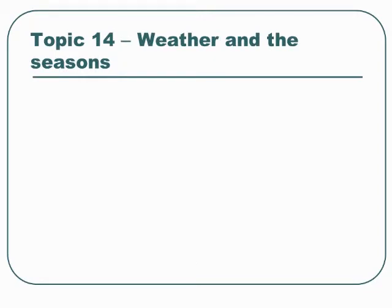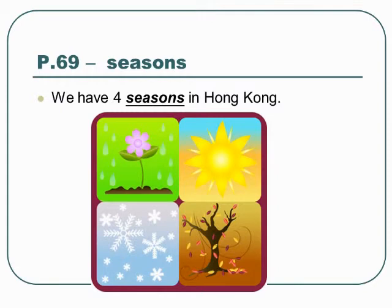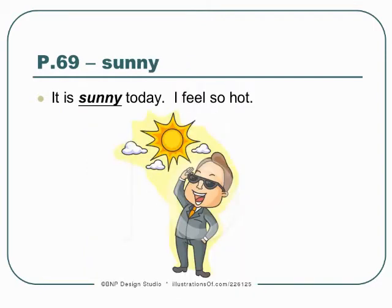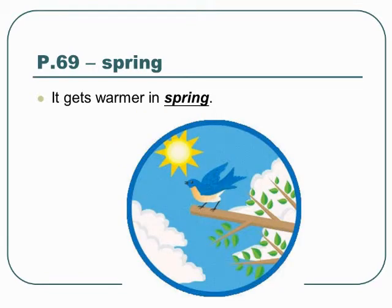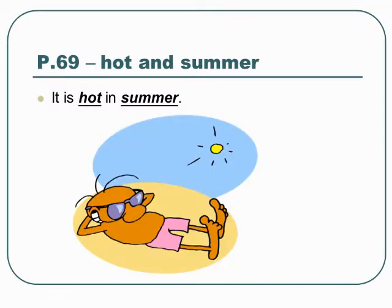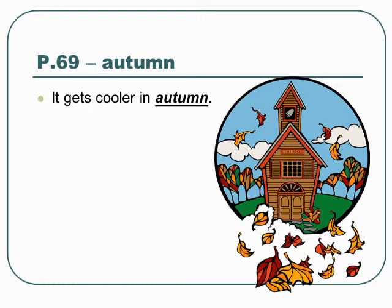Topic 14: Weather and the Seasons. We have four seasons in Hong Kong. Sunny — it is sunny today, I feel so hot. Spring — it gets warmer in spring. Hot and summer — it is hot in summer.